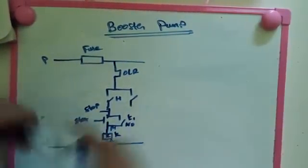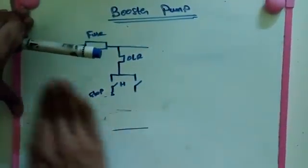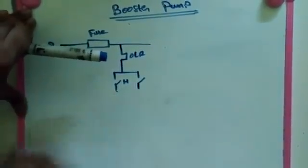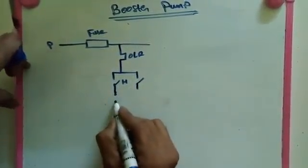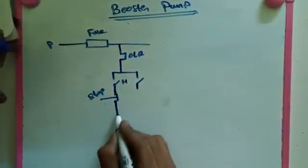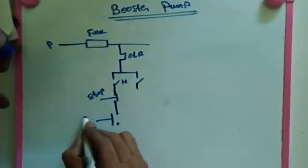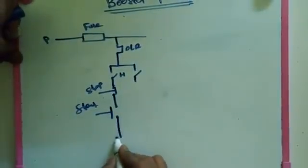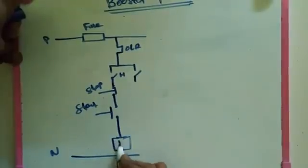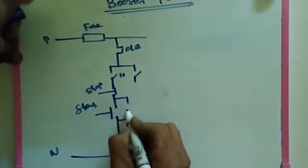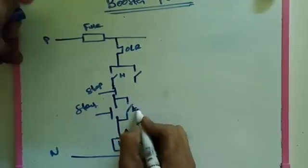There is not enough space, so let me redraw this clearly. Sorry for this. Here we make stop as NC contact. After that we make start. Then we put neutral and K1 A1 and A2. Here we make K1's contact.